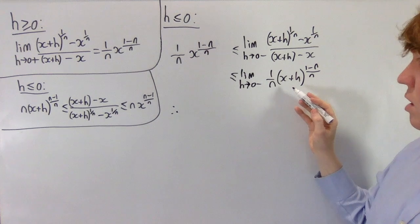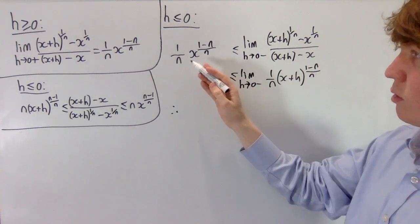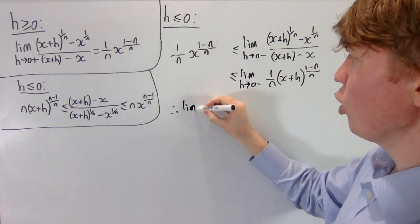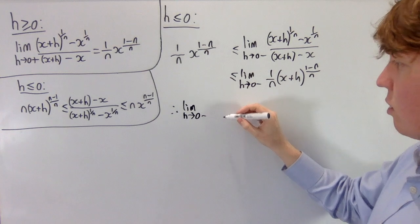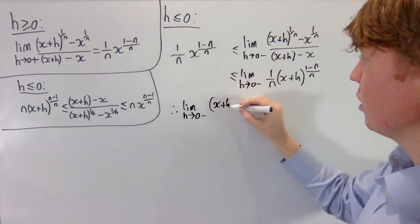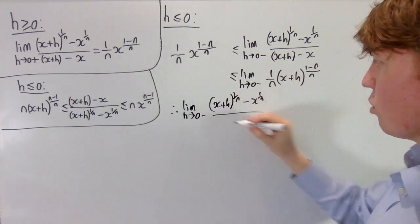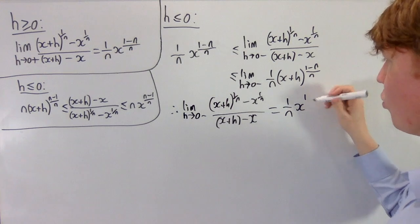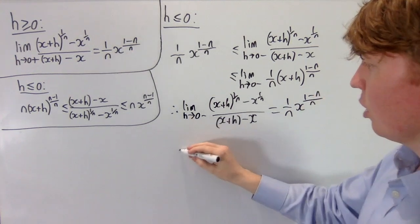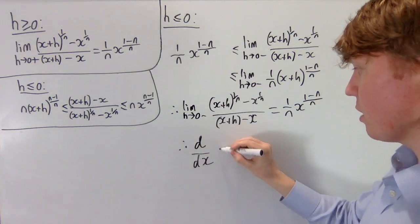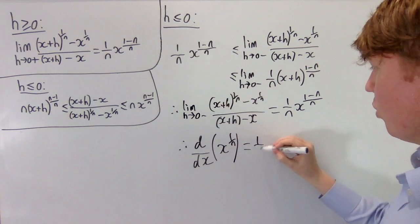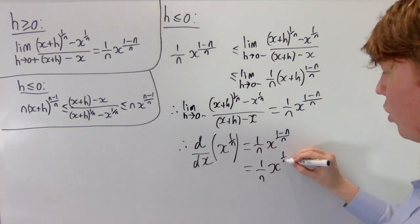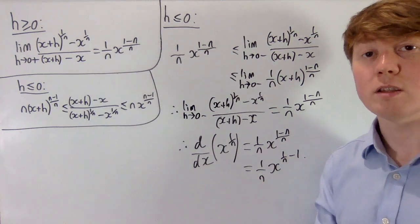Taking limits as h goes to 0, we get on both sides that our limit is bounded between 1 over n times x to the 1 minus n over n, and something which converges to 1 over n times x to the 1 minus n over n. So the left derivative of x to the 1 over n is indeed equal to the right derivative. This tells us that our function is differentiable, and its derivative at any point x is equal to 1 over n times x to the 1 minus n over n. We can conclude from first principles that the derivative of x to the 1 over n is equal to 1 over n times x to the 1 minus n all over n, which may also be written as 1 over n times x to the 1 over n minus 1.